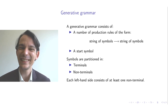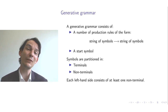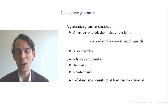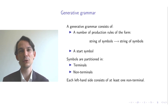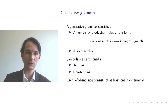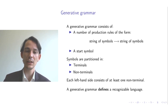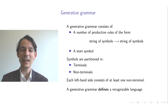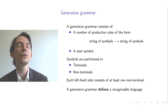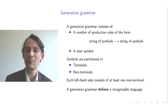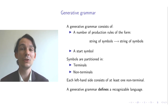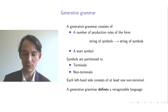Another restriction on this form of generative grammar is that every left-hand side of a production rule must have at least one non-terminal occurring in the string of symbols — so you cannot have an empty left-hand side. A generative grammar defines a recognizable language, which is a simple consequence of the fact that a generative grammar can be seen as a language generator, and language generators and recognizable languages are tightly related — but for that, see the previous video.